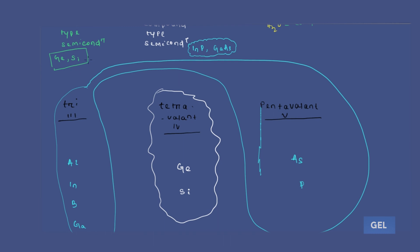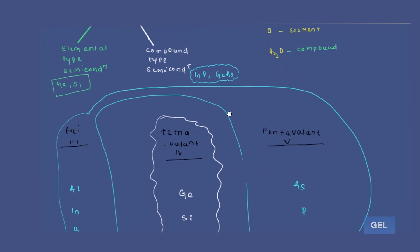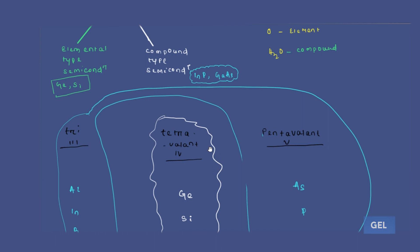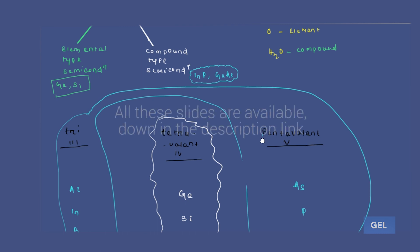To summarize: elemental type semiconductors are germanium and silicon. Compound type semiconductors are formed by combining trivalent and pentavalent elements. Please be careful with naming conventions for all these semiconductor materials. Thank you so much for watching. Stay tuned with Electronics Devices and Circuits — we'll finish this entire subject within 24 hours. Bye!